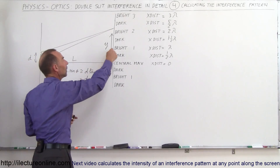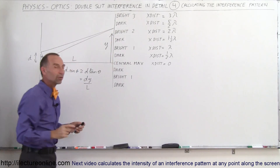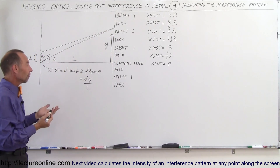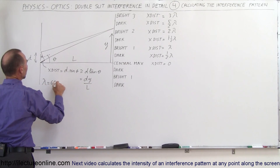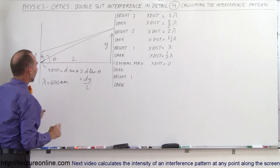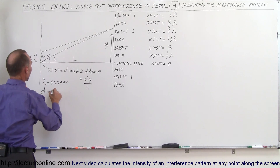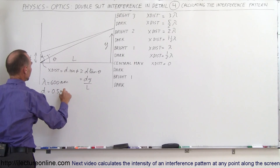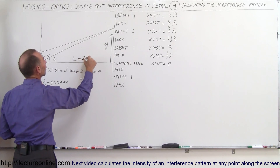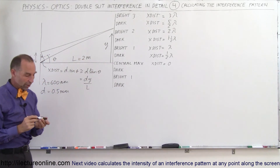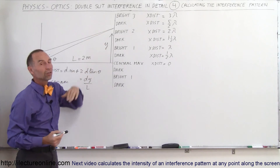Now, the way you find the actual value — how far away a spot is from the central maximum — we need the wavelength of the light. Let's say lambda equals 600 nanometers, the distance between the slits is half a millimeter, and the screen is 2 meters away from the slits. With this information, we should be able to figure out where these dark and bright spots will appear.